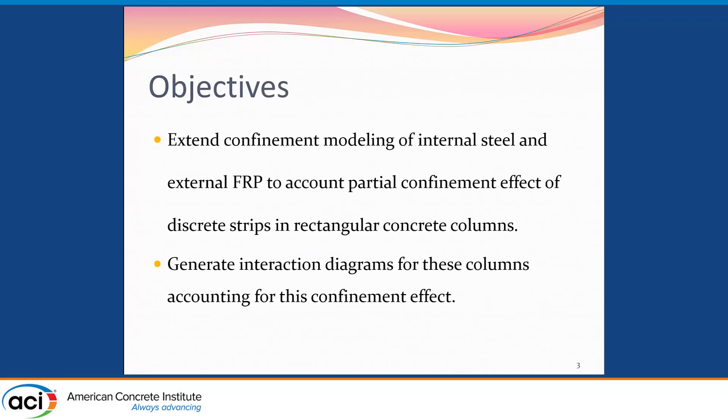The objective of this work is to extend confinement modeling in rectangular concrete columns to account for internal steel and external FRP confinement, specifically the effect of partial confinement when FRP is not provided continuously along the height of the column. In some cases, we might choose to not do that. There is a lack in models that account for the reduction in the confinement effect. That's the main objective of this work, to come up with a model that can actually account for the reduction in confinement due to the spacing of the FRP wraps. Once this model is obtained, we can use it to generate interaction diagrams for these columns while accounting for the confinement effects.